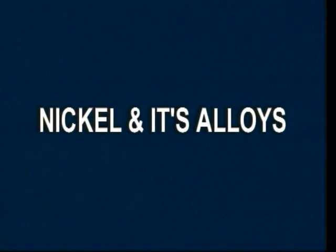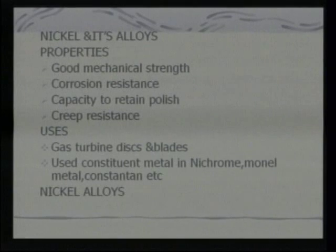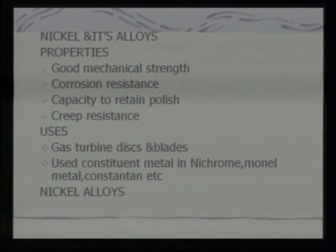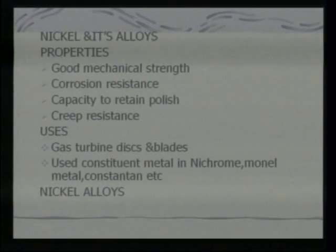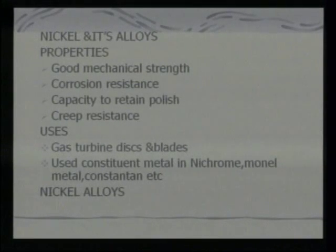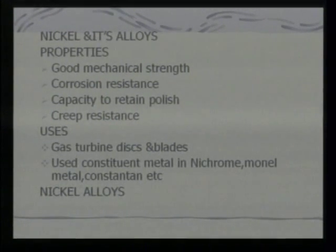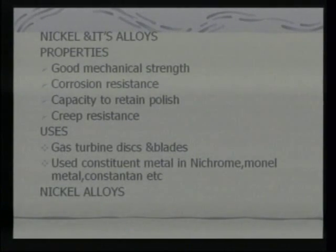Now we go to nickel and its alloys. Properties of nickel include good mechanical strength, corrosion resistance, capacity to retain polish, and creep resistance — meaning it does not undergo much deformation at elevated temperature over long periods. Nickel is used for gas turbine discs and blades, as a constituent in nichrome — the alloy used for making heating coil wires — and in monel metal, constantan, etc. Nichrome, an alloy of nickel, chromium, and iron, is used as a heating element.